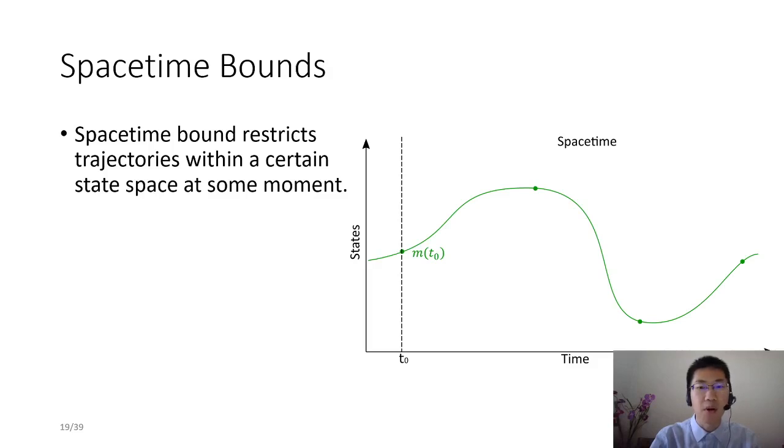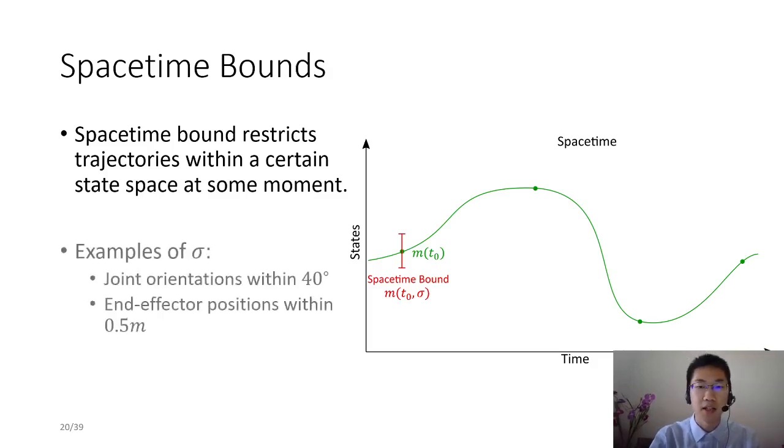Spacetime bounds at time t define a subset of state space that restricts trajectories. For example, at time t, we define a spacetime bound mt, which is a region of size sigma centered at mt. It restricts trajectories passing through it to be within a certain region, like joint orientations should be within 40 degrees to the reference, where end effector positions should be within 0.5 meters to the reference.